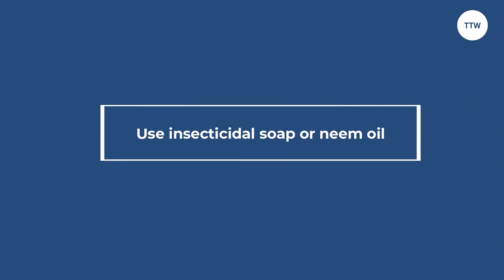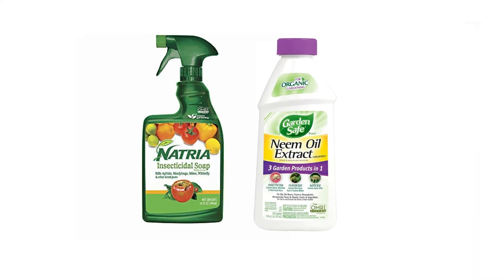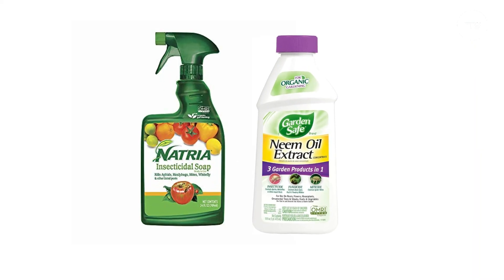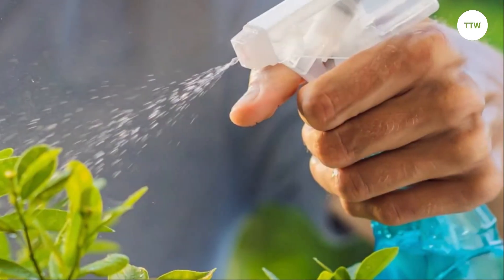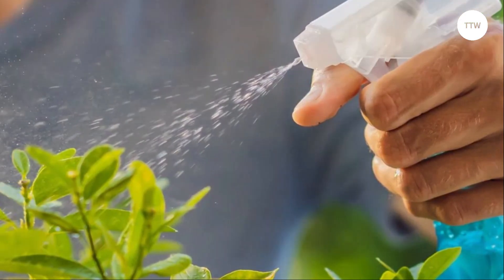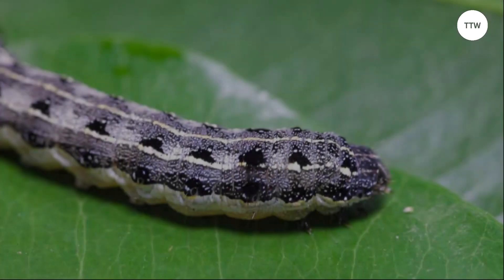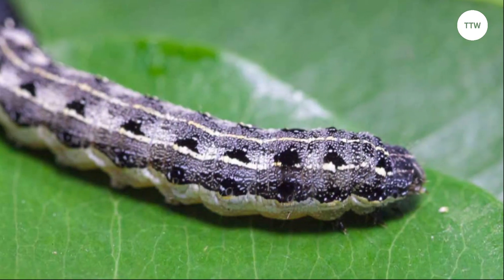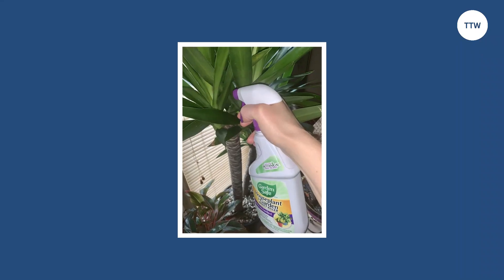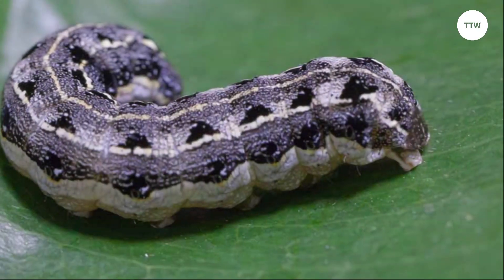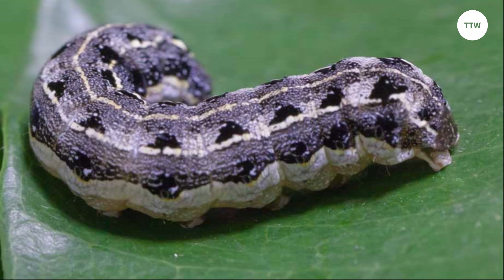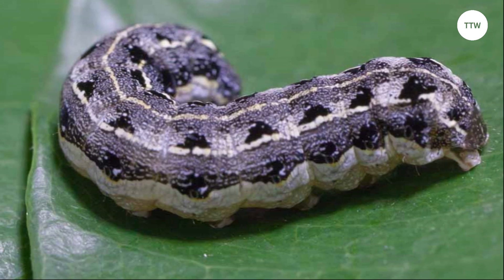Use insecticidal soap or neem oil. Another way to control cutworms is to use insecticidal soap or neem oil. These products are safe for people, pets, and the environment, and they work by smothering the cutworms and killing them. Simply spray the soap or oil on the soil around the plants, and the cutworms will come into contact with the product when they come out to feed.